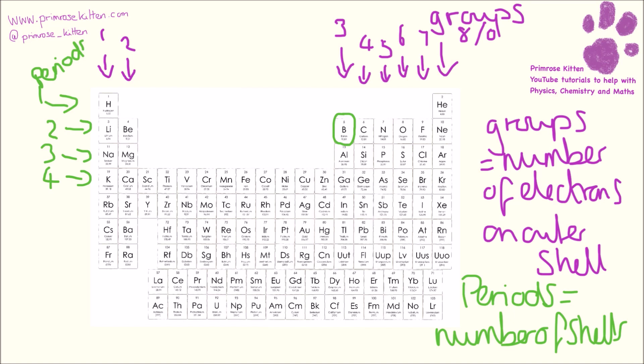So if we look at boron as our example, it has two shells and it has three electrons on the outer shell. Because it is in the second period, that tells us it has two shells, and it has, in the third group, three electrons on its outer shell. Then if we look at neon over here, we can see it is in the second period, so it has two shells and it has eight electrons on its outer shell.